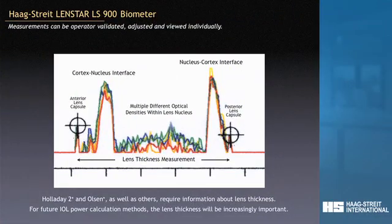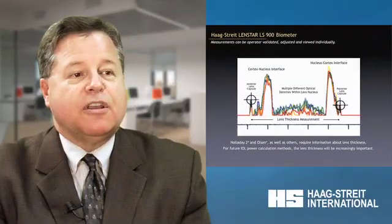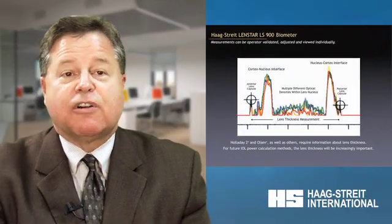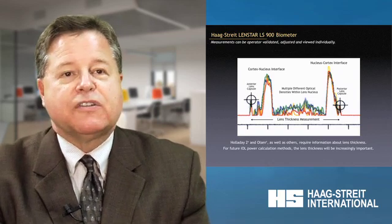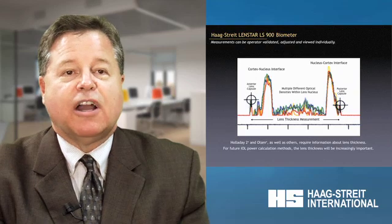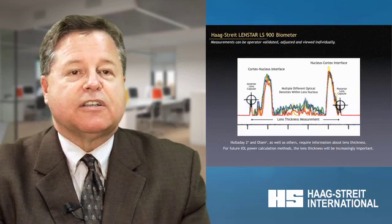Looking at the graphic display of the lens thickness with the LensStar, we can see some pretty amazing things, and I consider this to be a technological achievement. We have the anterior lens capsule, the cortex-nucleus interface, multiple opacities of the nucleus, and also the same thing on the backside. When you think about it, the posterior lens capsule is about five microns thick and it's a clear structure, and yet the software can figure this out for us. The same with the anterior lens capsule, probably about 12 microns, and the software can find it for us. So it gives us the lens thickness measurement.